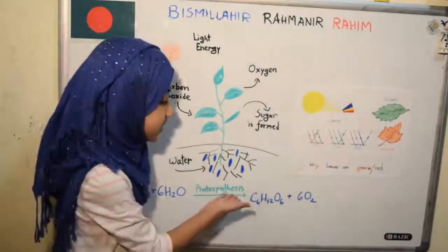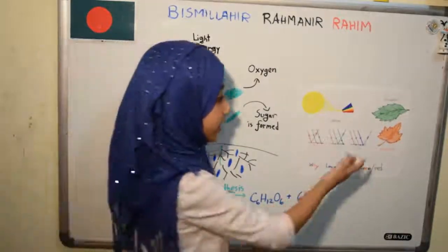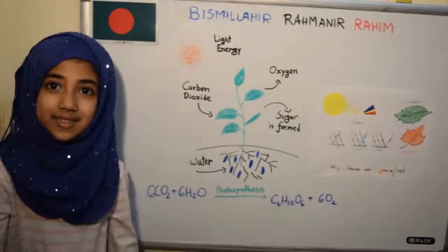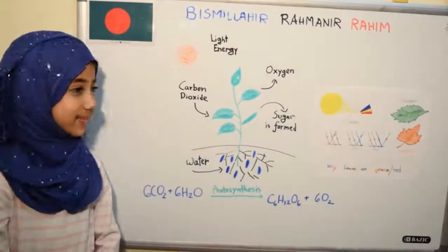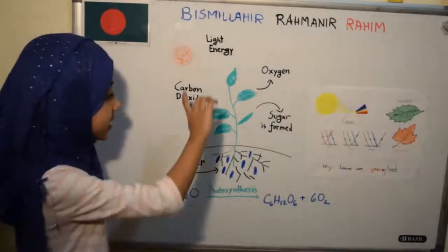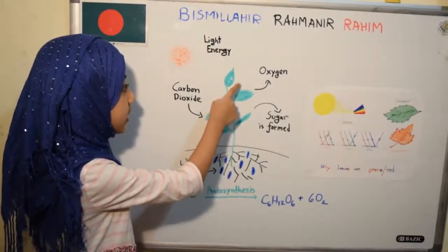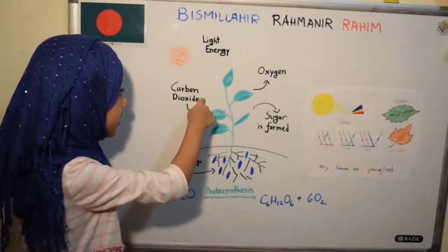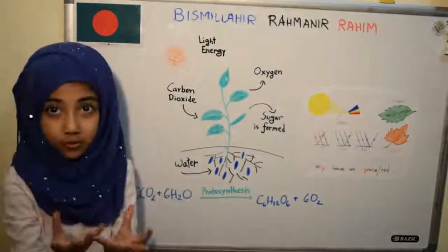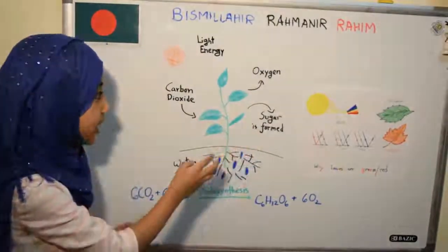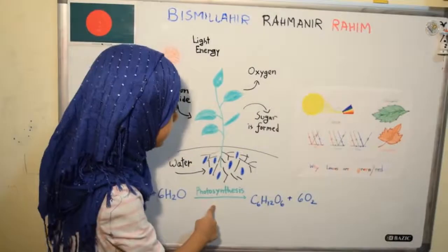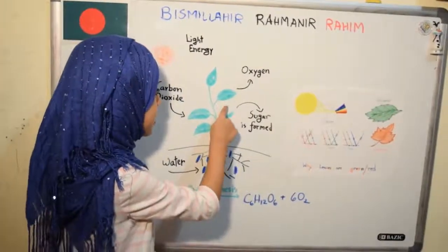What is photosynthesis actually — what does it mean? During the summer, when the sun gives a lot of light to the plants, the plant takes the light as energy. And by that energy, it takes carbon dioxide from the air and water from the soil. Then it makes its own food, which is sugar. Then it gives something away into the air, which is oxygen. This process is called photosynthesis.